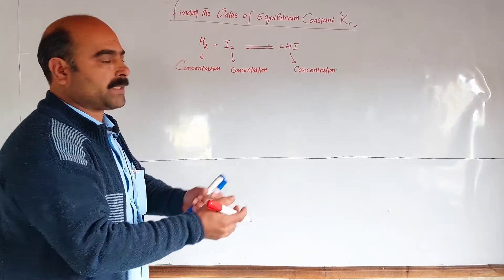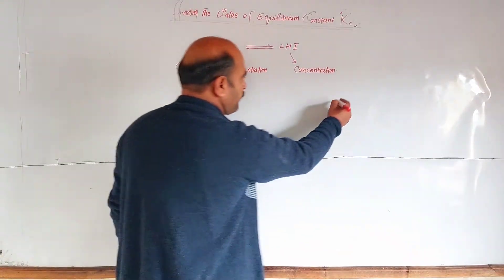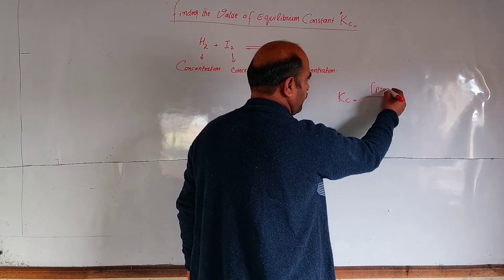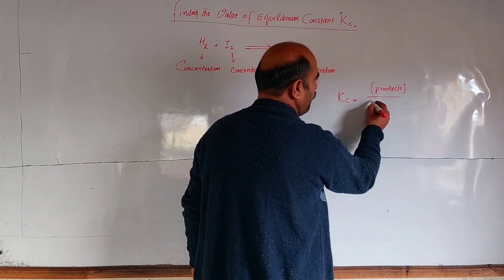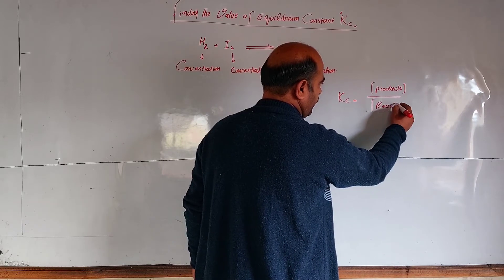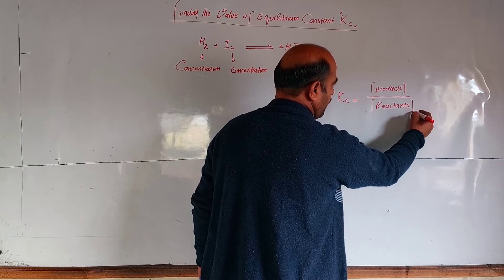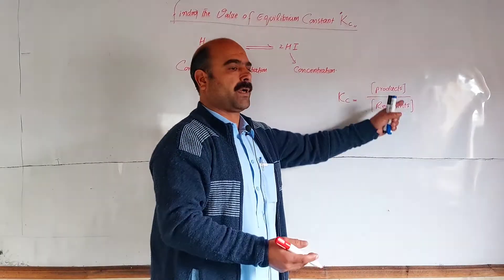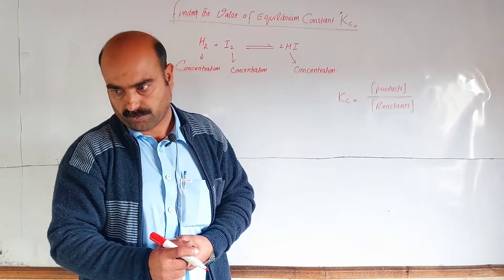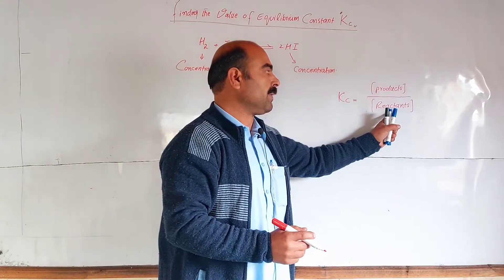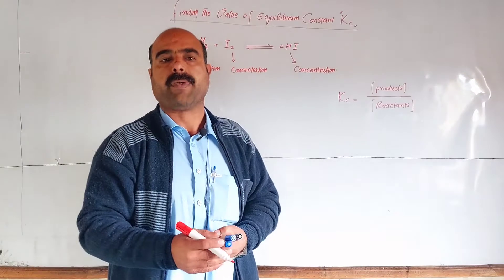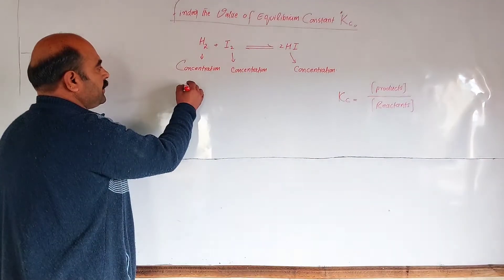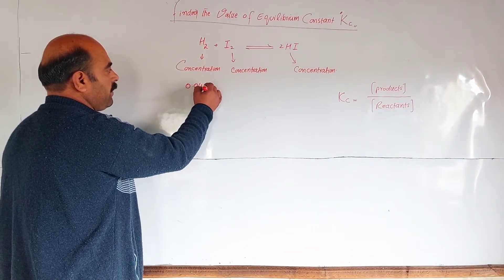Kc is the ratio between concentration of products to concentration of reactants. This is the general form to calculate Kc value. The products concentration we determine experimentally and find out, and the reactants concentration are also given experimentally.